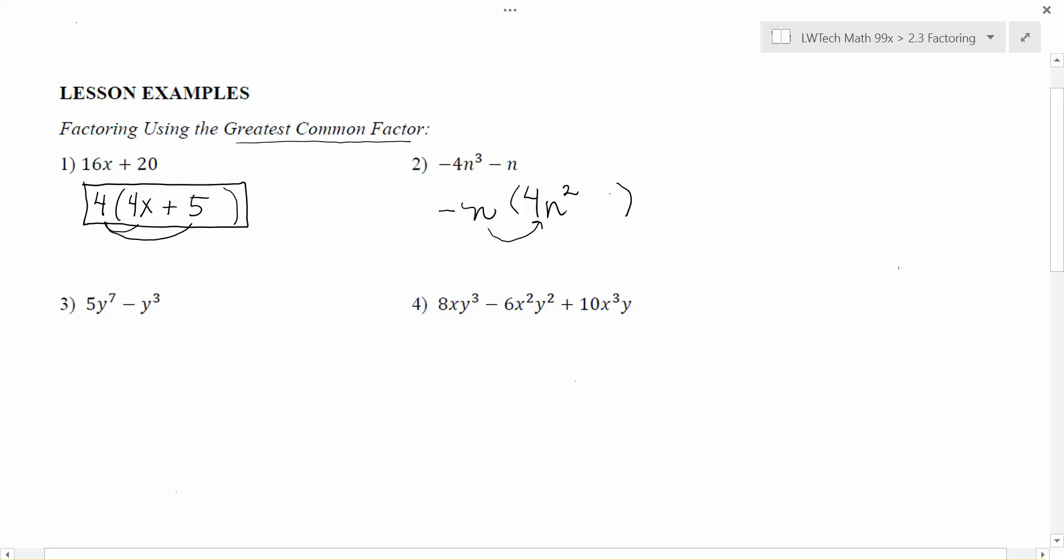Well, it already is what we want, so what could we multiply by to make that work? n goes into n one time, and we pulled the negative out, so we're going to write that as +1. It's really important at this point - I recommend multiplying things out just to make sure. We're not trying to change the problem at all; we're trying to rewrite this expression in an equivalent way.